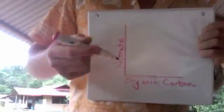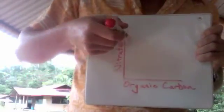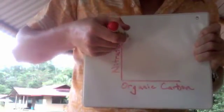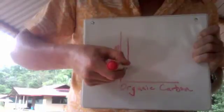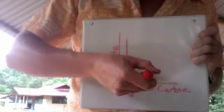We discover and report a strong relationship between organic carbon and nitrate. The relationship, when plotted on a graph, looks much like a hockey stick, with nitrate on the y-axis and organic carbon on the x.